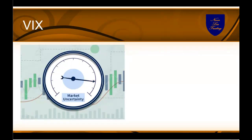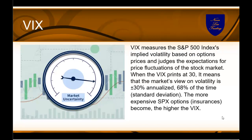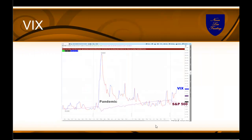A commonly known measure for volatility is the VIX index, published by the CBOE. The VIX measures the S&P 500 index's implied volatility based on option prices and judges expectations for price fluctuation of the stock market. When the VIX prints 30, for example, it means the market's view of volatility is plus or minus 30% from today, looking forward annualized with a 68% probability. The VIX goes up when uncertainty rises and usually goes down when the market is going up, creating an inverse relationship between the S&P 500 and the VIX. The VIX is often called the fear index because a high VIX expresses high uncertainty in the market.